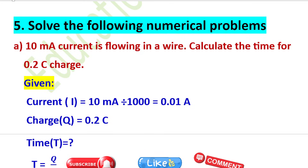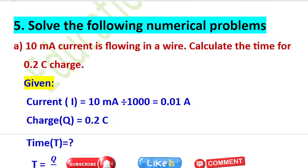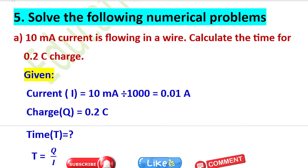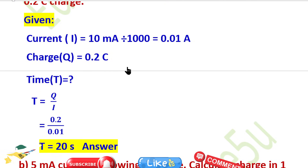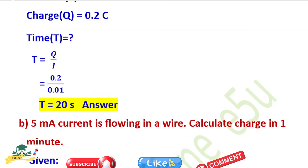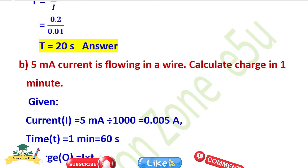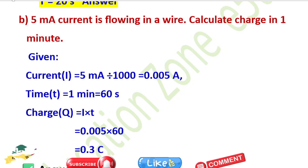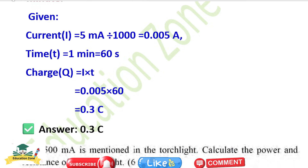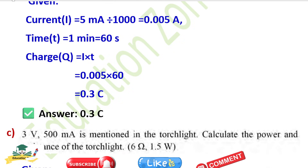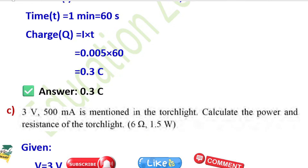Numerical problems. Question E: 10 milliampere current is flowing in a wire — calculate the time for 0.2 coulomb charge. Also, 5 milliampere current flowing in a wire — calculate charge in one minute. Given: I = 5 milliampere = 0.005 ampere, time = 1 minute = 60 seconds. Charge Q = I × t = 0.3 coulomb.